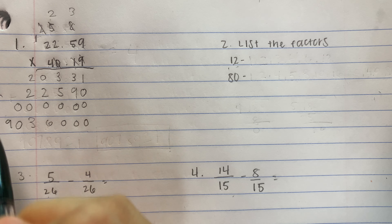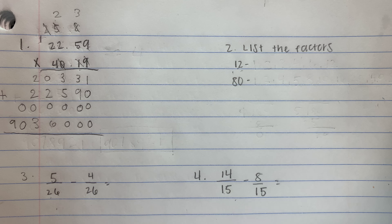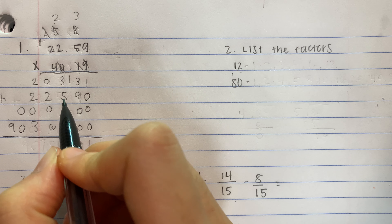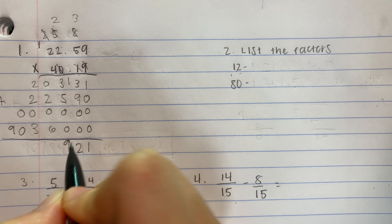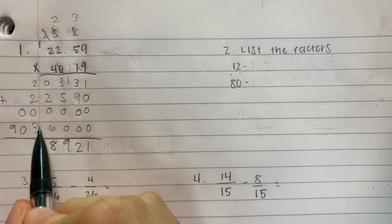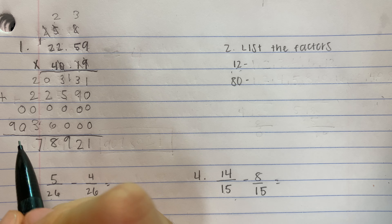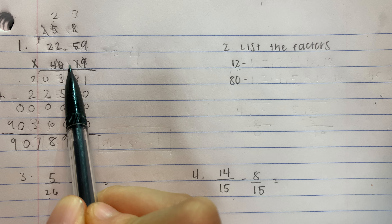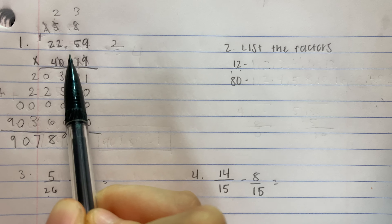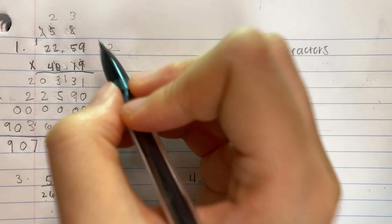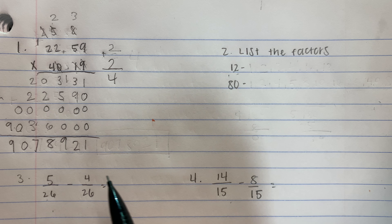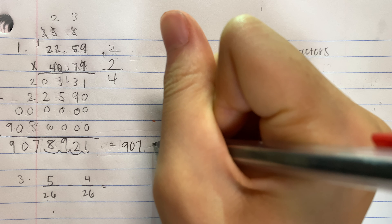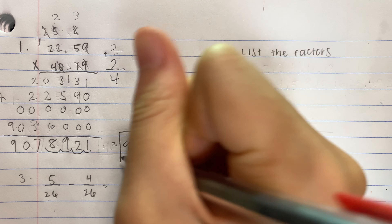Like we do with any other multiplication, we add it all together. So: 1, then 3 plus 9 is 12, then 5 plus 3 plus 1 is 9, then 6 plus 2 is 8, then 3 plus 2 plus 2 is 7, then 0 plus 0 is 0, and 9 by itself. Now this is when the part gets different — there's a decimal in each number. In this number there are two digits behind the decimal, and in this number there are also two digits behind the decimal. Add these together and there are four digits behind the decimal in total. So from here we go 0.1234, and the final answer is 907.8921.